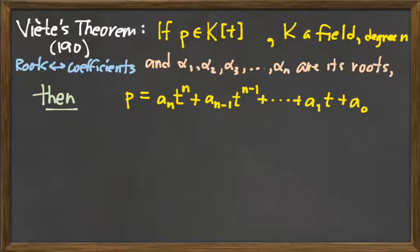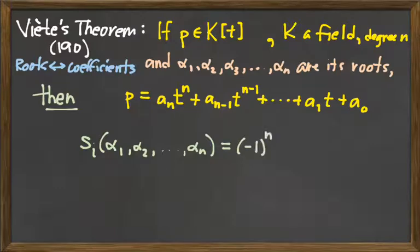So what's the result? Now here comes the strange, funny, cloaked-in notation way of saying it. S sub i of alpha 1, alpha 2, dot dot dot, up to alpha n is equal to negative 1 to the power i times a sub n minus i divided by a sub n.